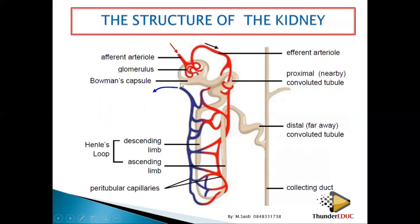The outside part of the glomerulus is called the Bowman's capsule — it's like a cup that holds and facilitates filtration. When filtration occurs, the filtrate goes into the capsular space of the Bowman's capsule. The first coiled portion after that is called the proximal convoluted tubule.